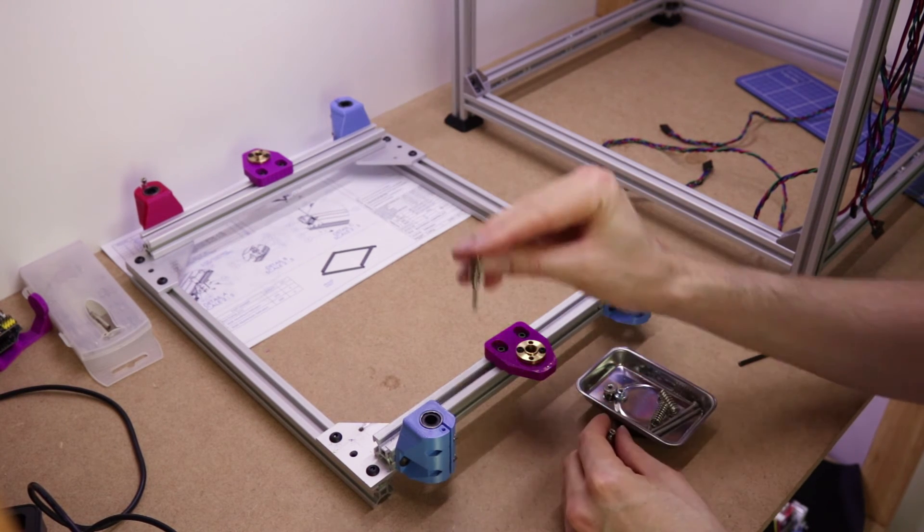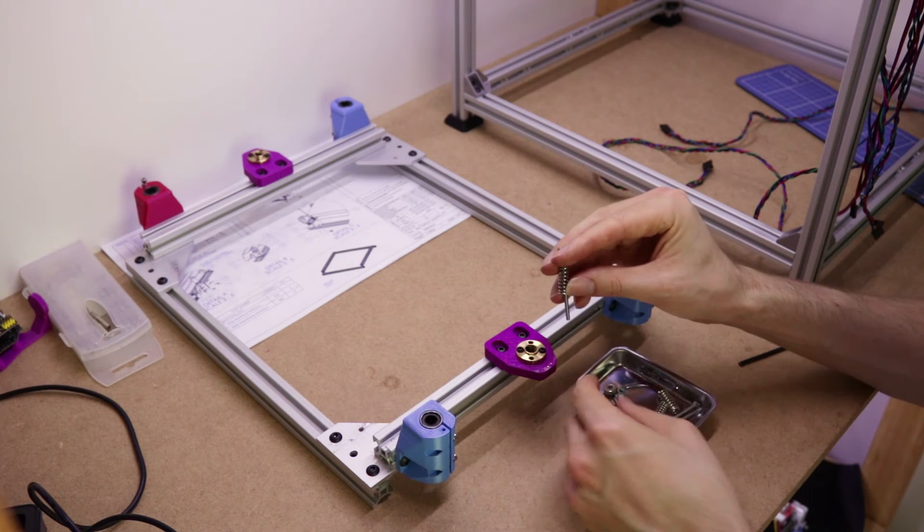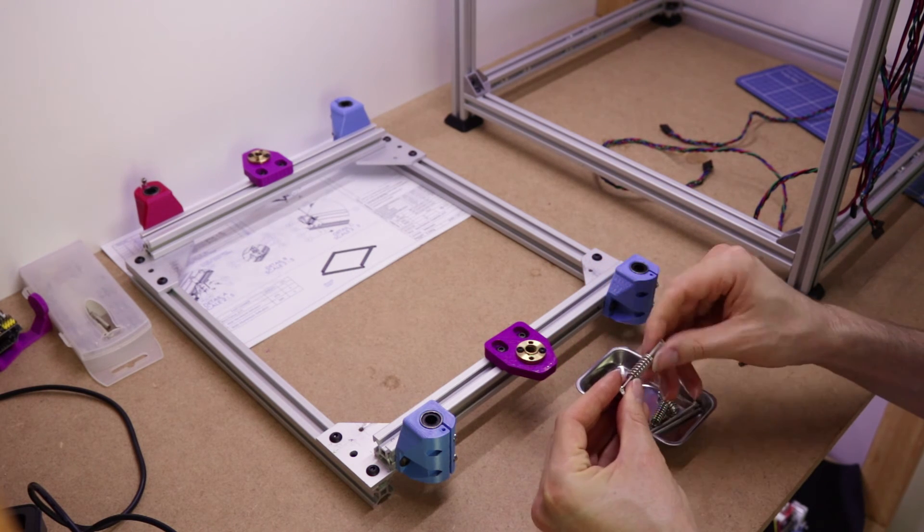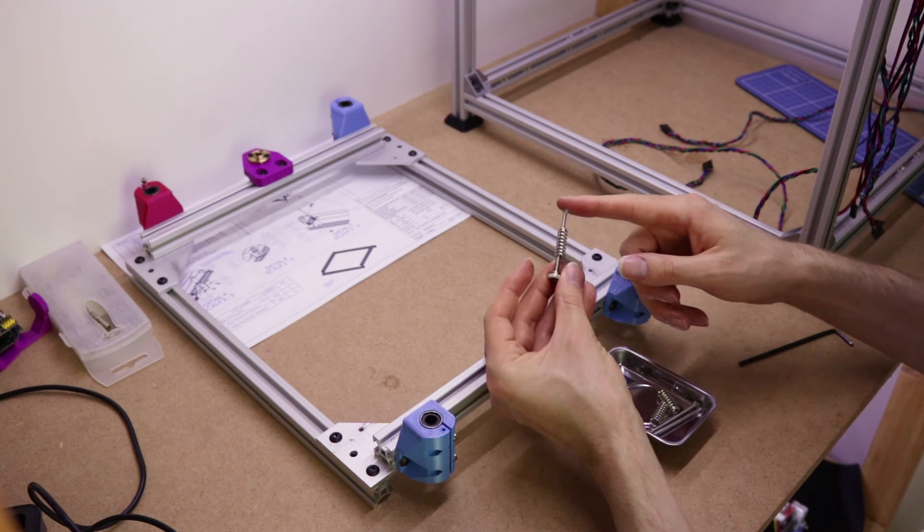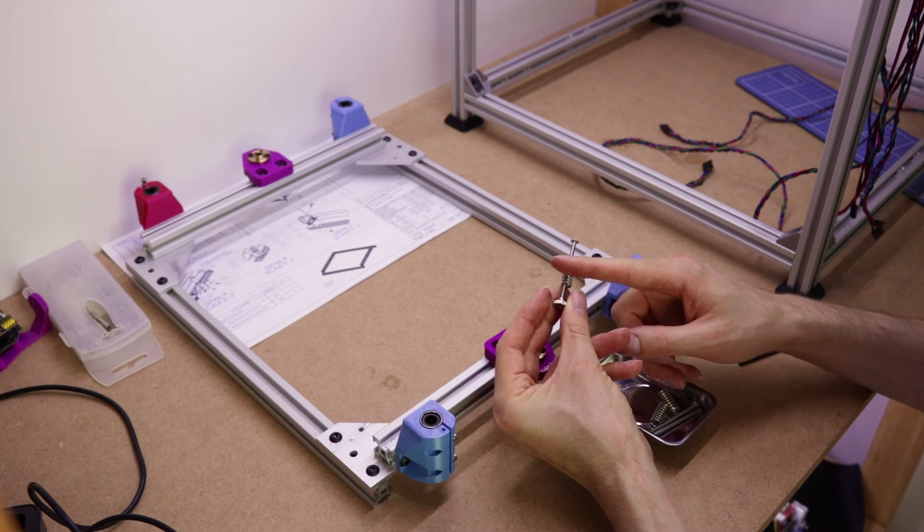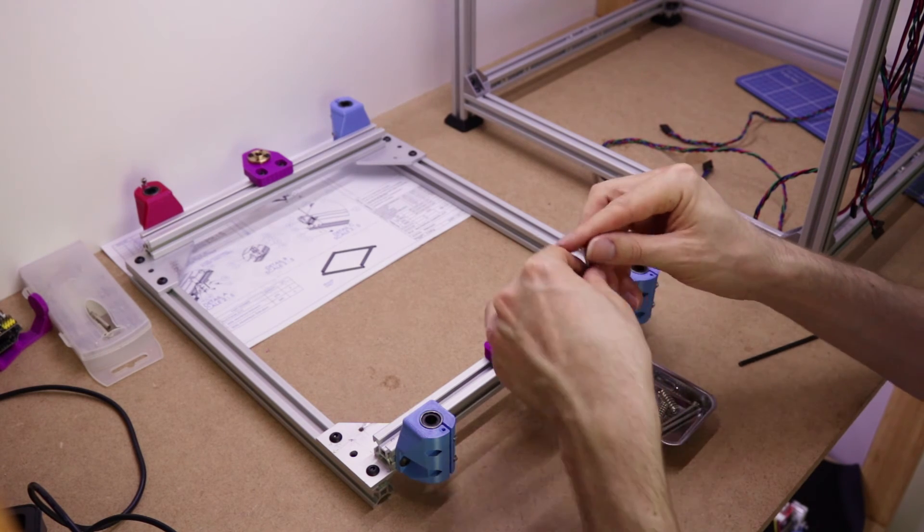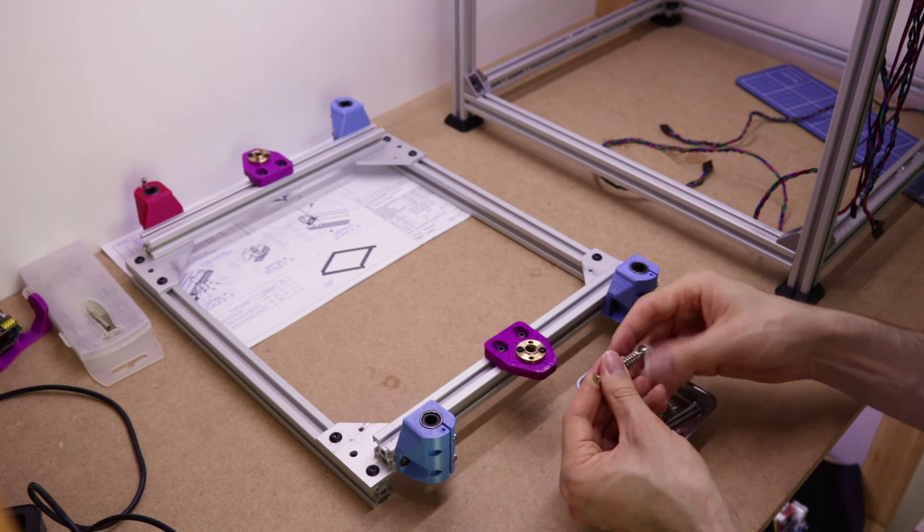And then the thumb nut goes through the plate and then the thumb nut on the bottom. So you have screw, build plate, spring, mounting plate, thumb nut. And then you can just twist the thumb nut to change the height of the bed.